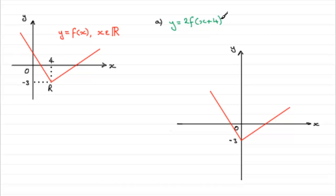Now what we need to do is multiply by 2 and what this does is it stretches the graph by a scale factor of 2 parallel to the y axis. So this point here at minus 3 is now going to be pulled down by a factor of 2, in other words down to minus 6.